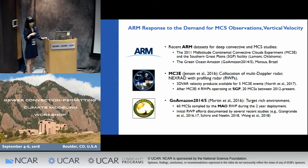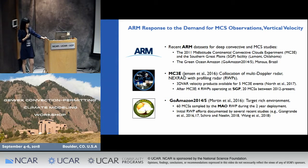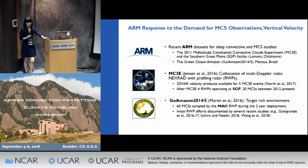One is MC3E, happening in Oklahoma in 2011 — you may be familiar with it — and also the continuous SGP dataset. The other is GoAmazon, the 2014 and 2015 campaign that happened in the Amazon basin. It was hit by many different types of convection during this two-year campaign period, and 60 of them are organized MCS systems. There have been a lot of initial efforts related to these datasets.